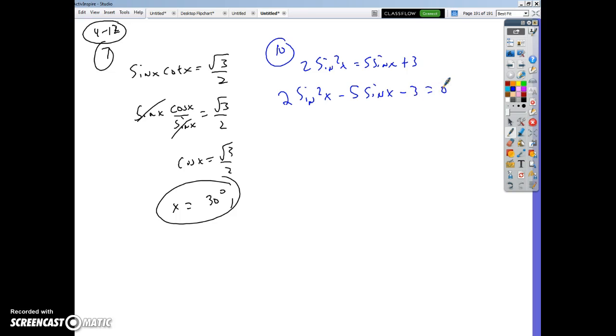So then I've got to go factors of negative 6 that give me negative 5. I'm thinking negative 6 and positive 1. So I'd set this up as 2 sine x, sine x, because I know these two have to give me 2 sine x squared, right? 2 times what gives me negative 6? Negative 3. And then 1 times what gives me 1? 1. So I get 2 sine x plus 1 equals 0, and I get sine x minus 3 equals 0.